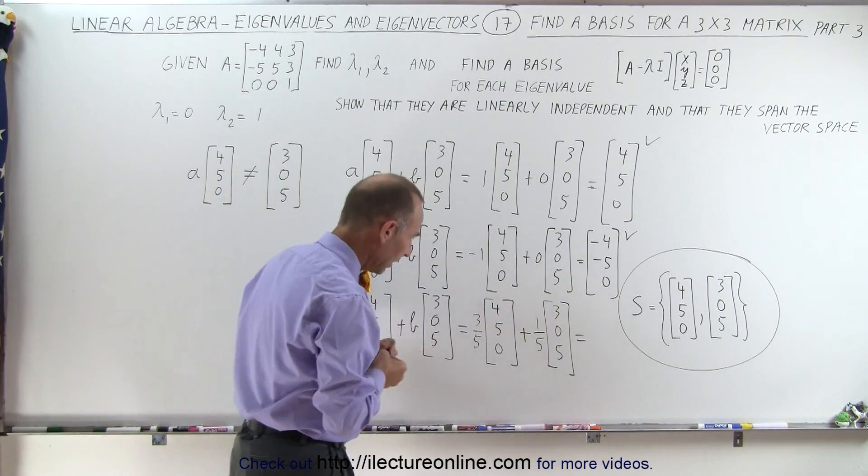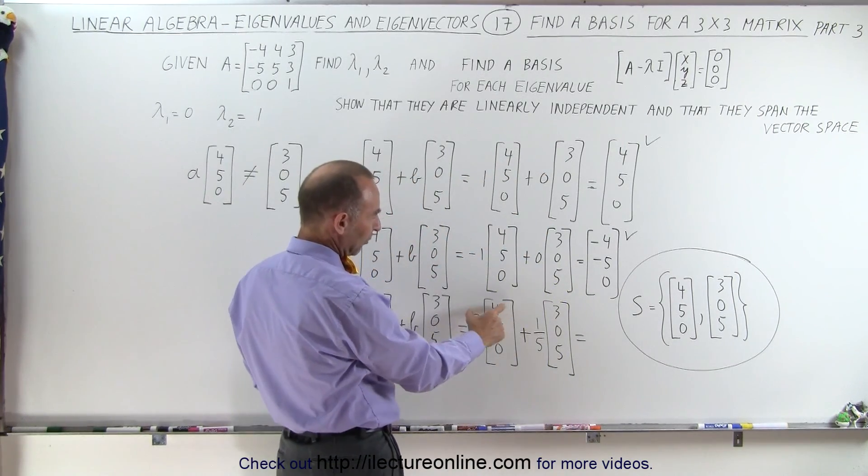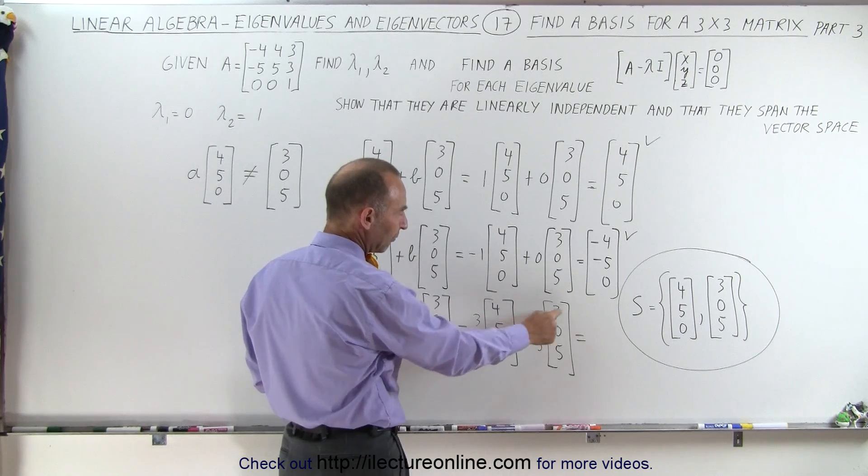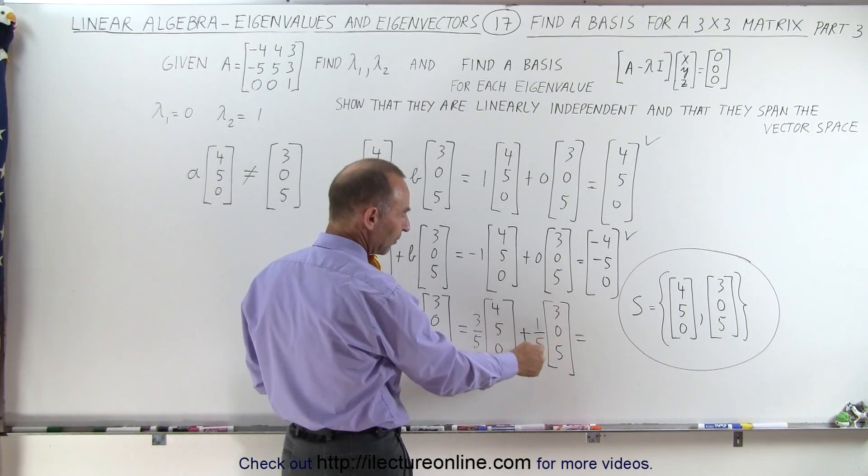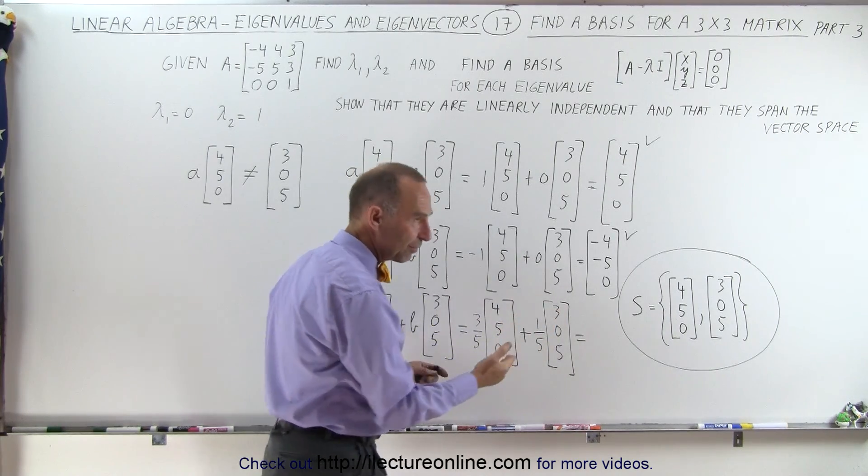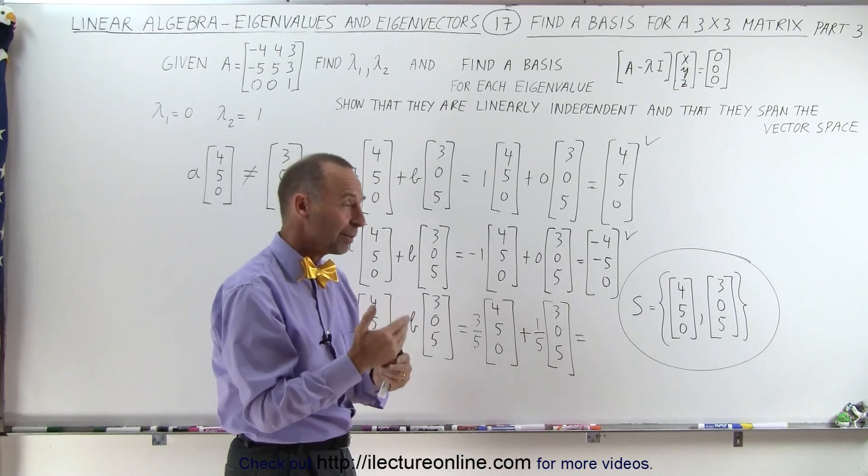3/5 times 4, that's 12/5, plus 1/5 times 3, that's 3/5. 12/5 plus 3/5 is 15/5. 15 divided by 5 is 3.